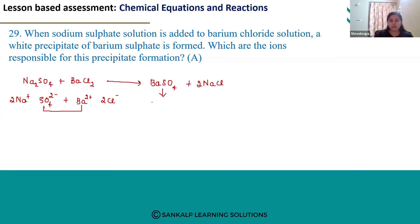This is the precipitate formed in this reaction. Barium sulphate is insoluble, so it forms a precipitate. The ions responsible for the precipitate formation are barium (Ba²⁺) and sulphate (SO₄²⁻).